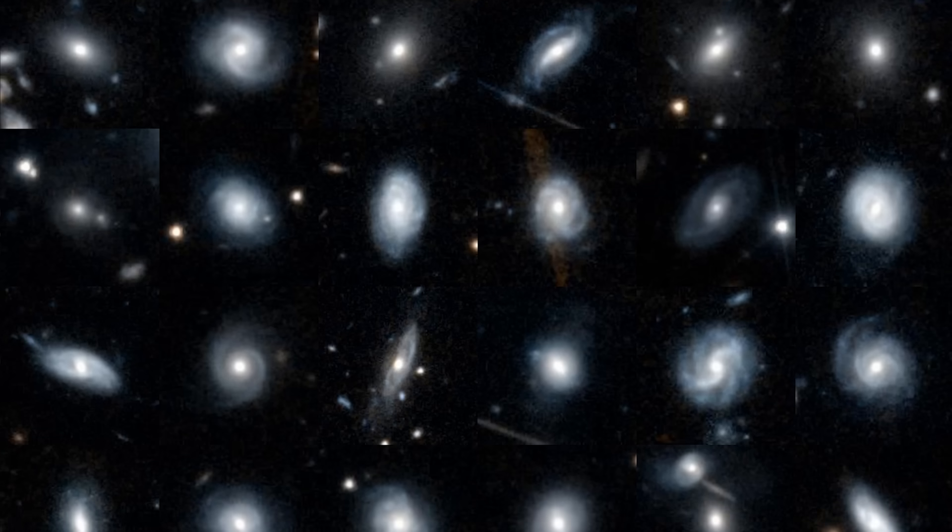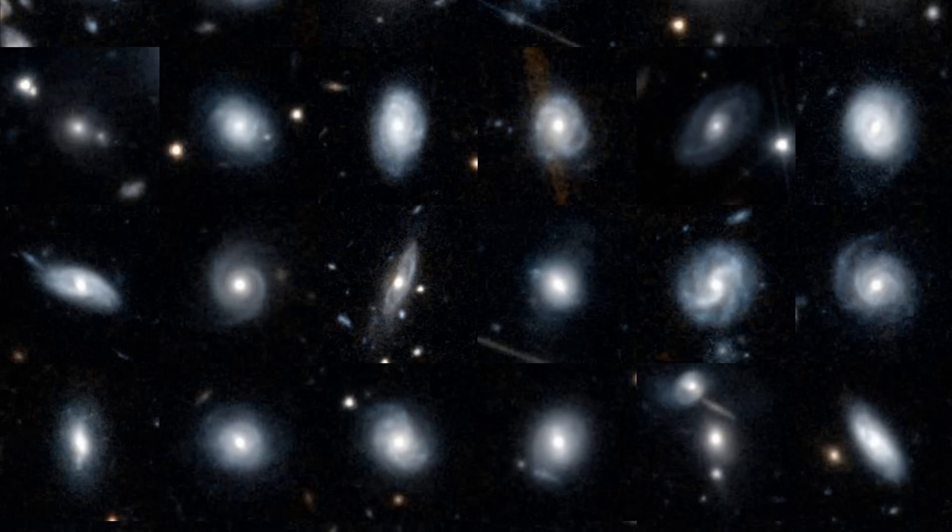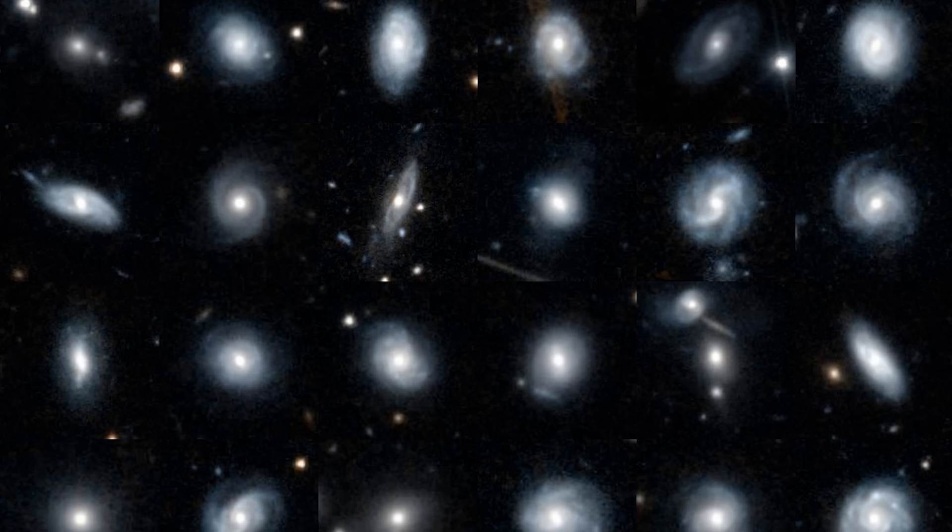In Galaxy Zoo, anyone can explore Euclid's images and help identify grand design spirals, edge-on disks, fuzzy ellipticals, and interacting galaxies with warped shapes.